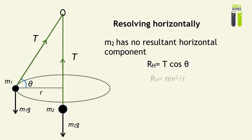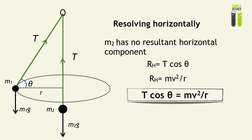Since that is the only resultant force acting on M1, M1 undergoes horizontal circular motion where the centripetal force equals the horizontal component of resultant force. In other words, T cos theta equals Mv squared over r.